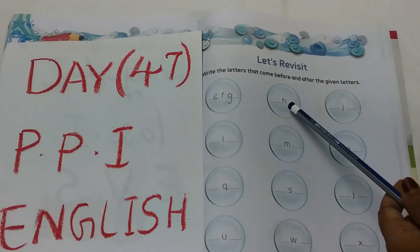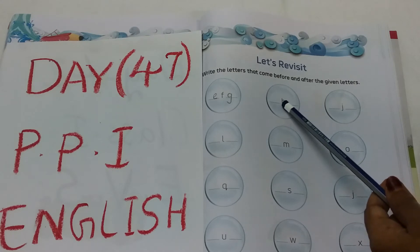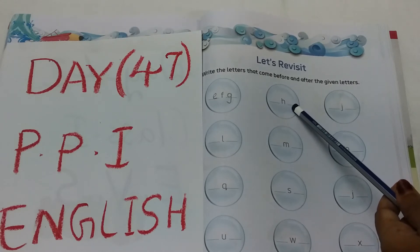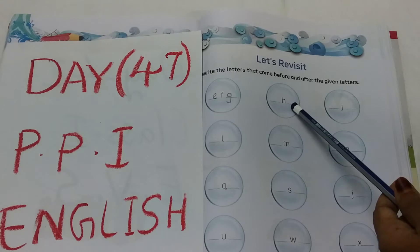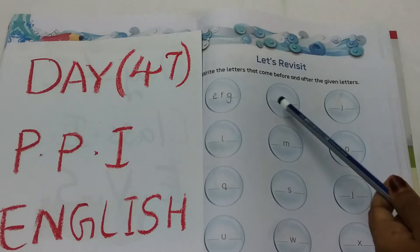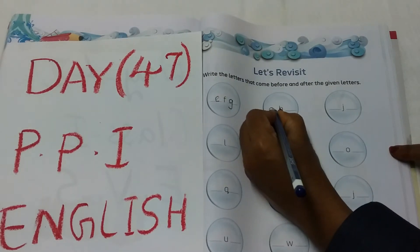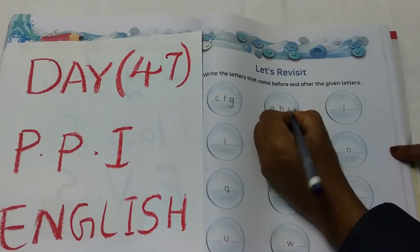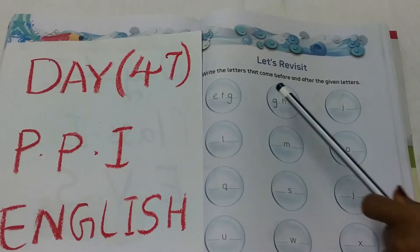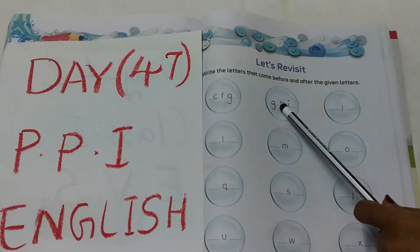See the next circle. Letter H. After H, I. But before H, G. Before H, G. So G, H, I.